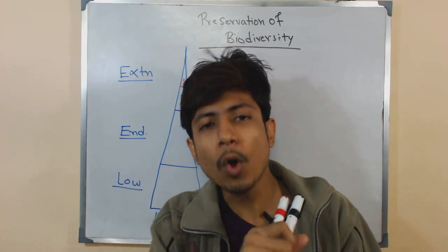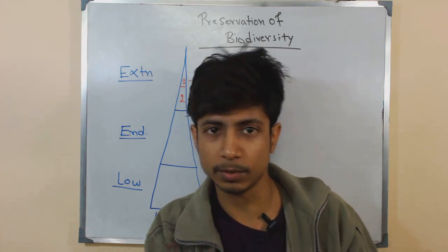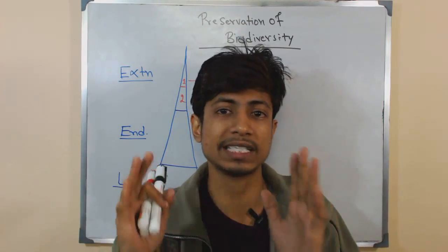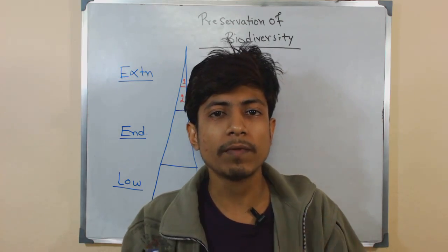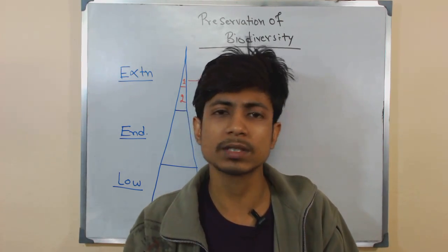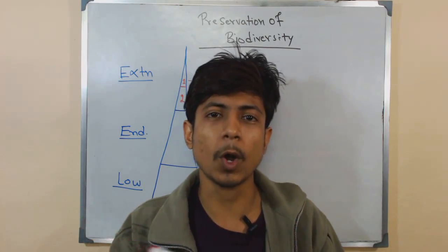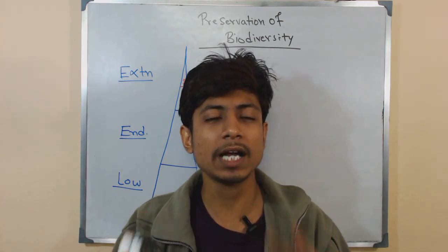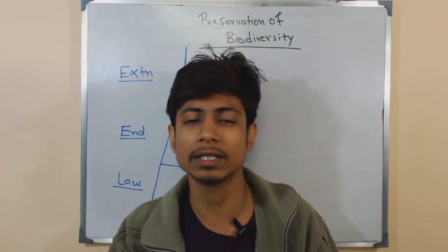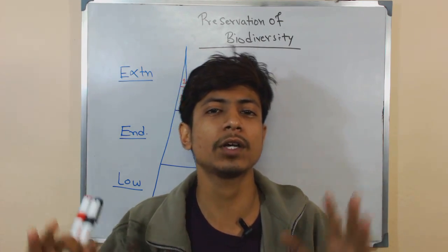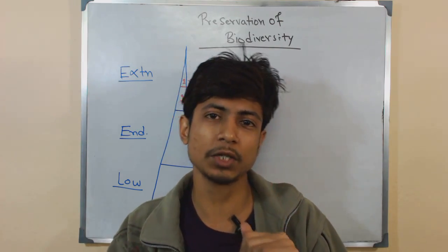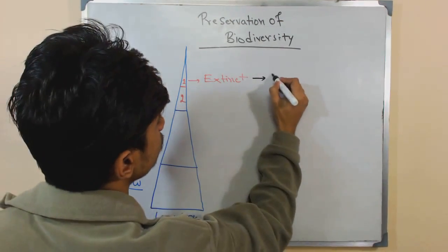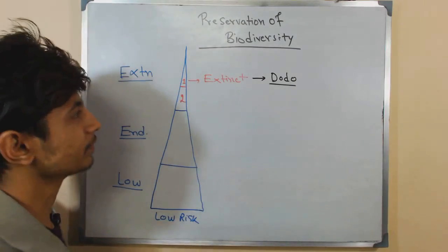Sometimes we declare certain organisms as extinct, but after certain years we find that organism again due to miscalculations. We are still unable to explore all the animals and plants present on the planet — there are plenty of regions and species yet to be discovered. So extinct means completely ruled out. The classic example is the Dodo of Mauritius, which is completely extinct.